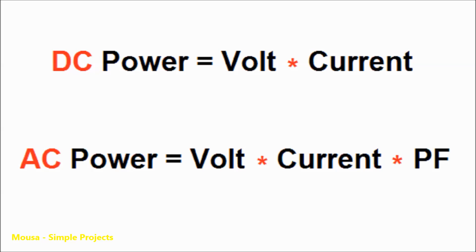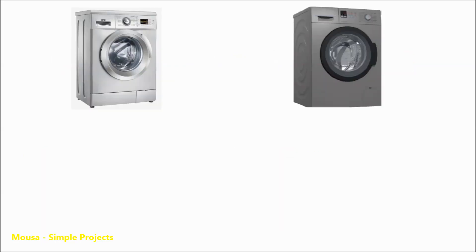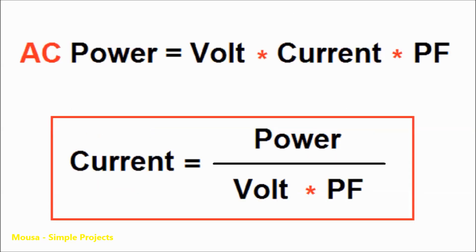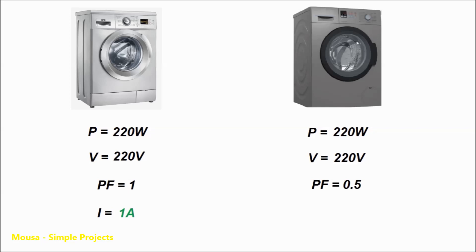Assuming we have two AC appliances both consuming 220 watts of power, but the power factor in the first device is 1 and the power factor in the second device is 0.5. In this case, the first device draws 1 amp of current but the second device draws 2 amps of current. So the load with less power factor draws more current, however the power consumption in both appliances is the same.